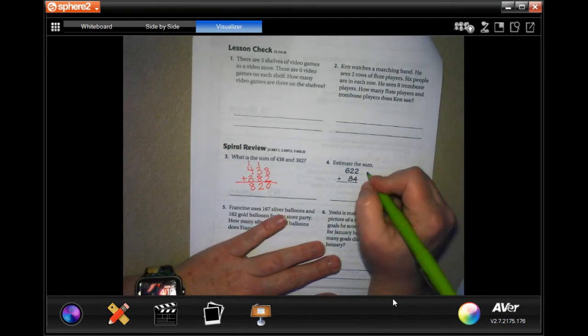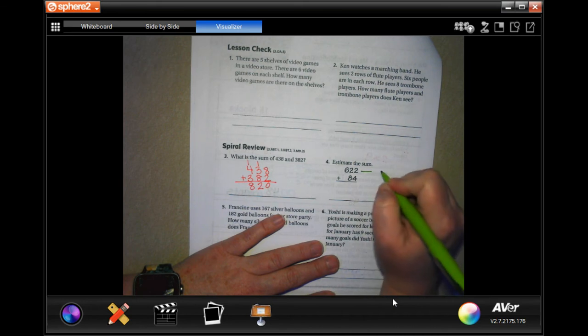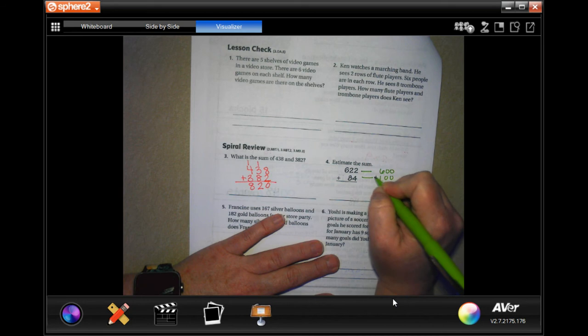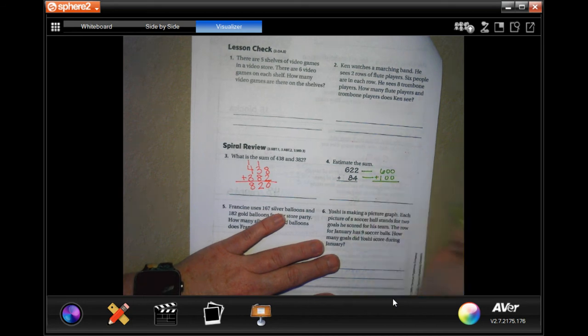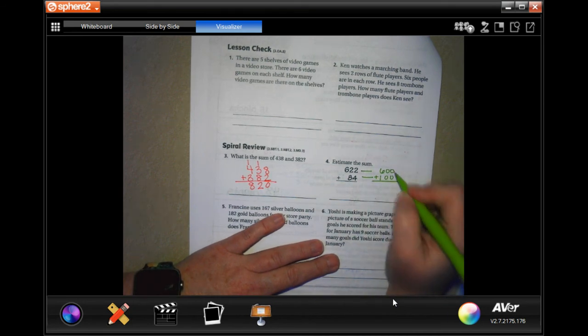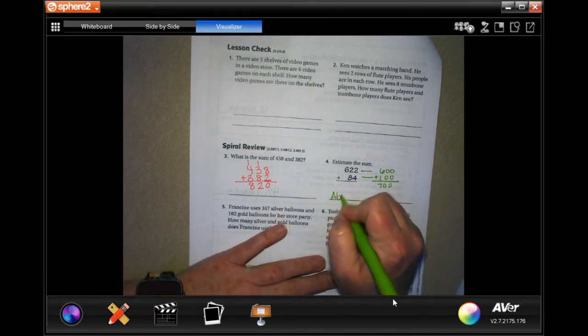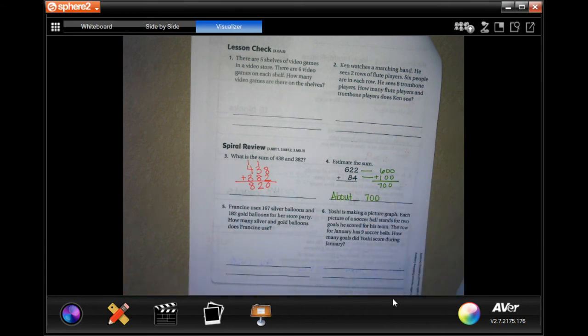Now we're going to estimate the sum. Well, 622 would round to about 600, and 84 would round to about 100. And sum means adding. Well, 600 and 100 is gonna be 700. About 700.